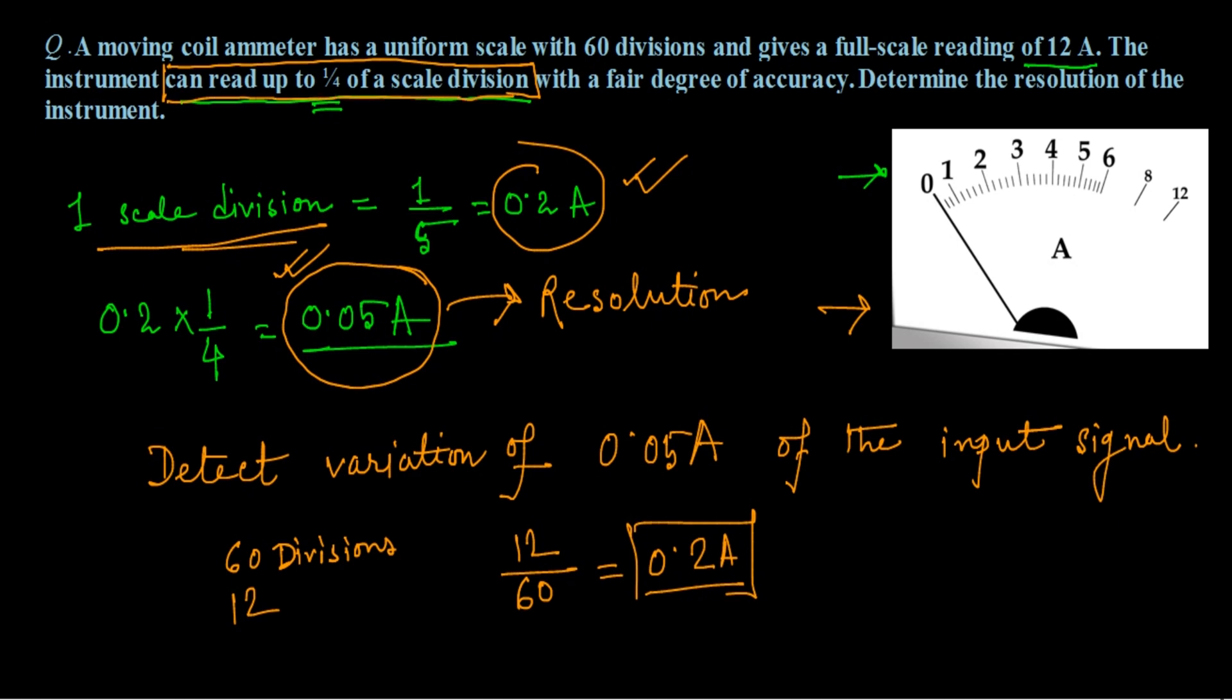That is 1/4th of the scale division. 1 scale division is 0.2, and 1/4th is 0.2 into 1 by 4, that is 0.05 ampere. So this is the way we can differentiate or calculate the value of resolution of any instrument.